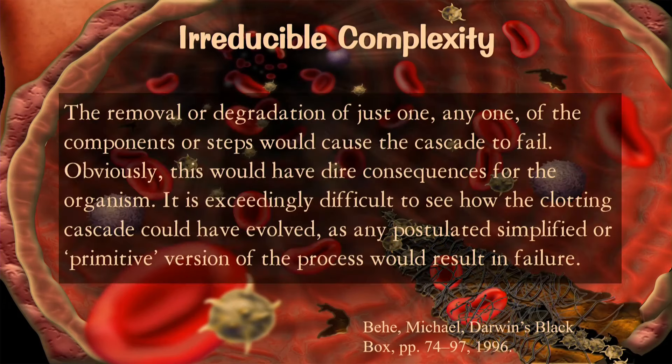Michael Behe, in his book Darwin's Black Box, has noted that the blood clotting cascade is also an example of irreducible complexity. He said the removal or degradation of just any one of the components or steps would cause the cascade to fail, which would have dire consequences for the organism. It is exceedingly difficult to see how the clotting cascade could have evolved, as any postulated simplified or primitive version of the process would result in failure.